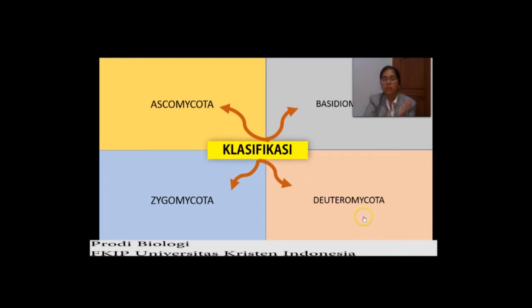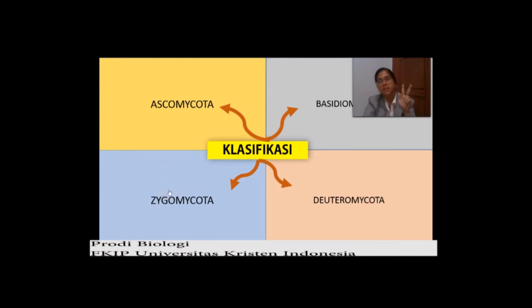Kalian kalau ingin mengingatnya dengan gampang, pakai singkatan JABD: Zygomycota, Ascomycota, Basidiomycota, dan Deuteromycota. Yang keempat itu adalah klasifikasi dari jamur.